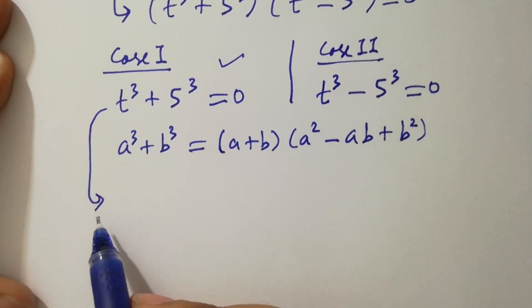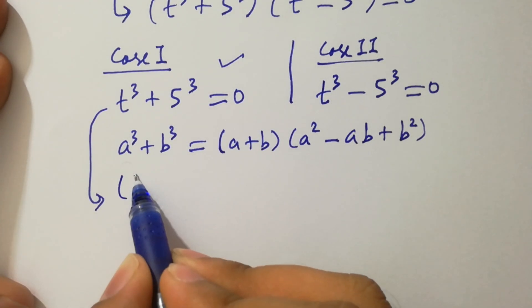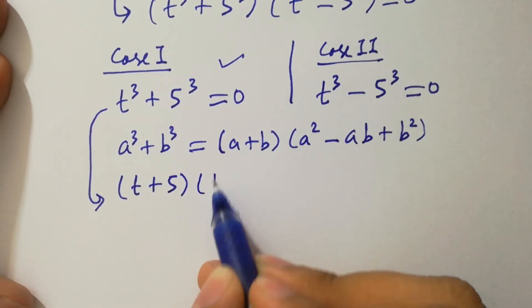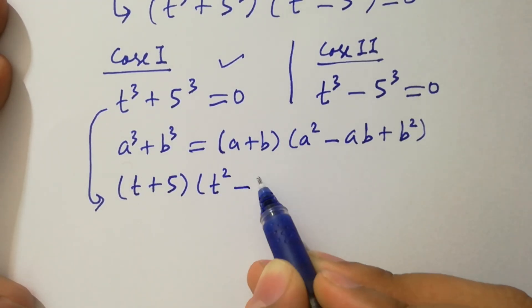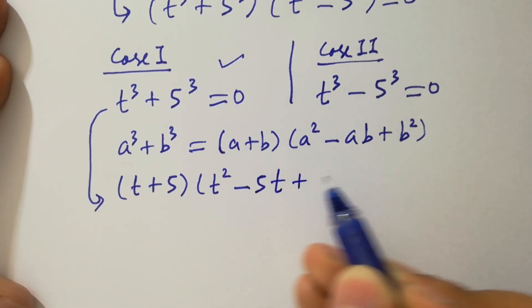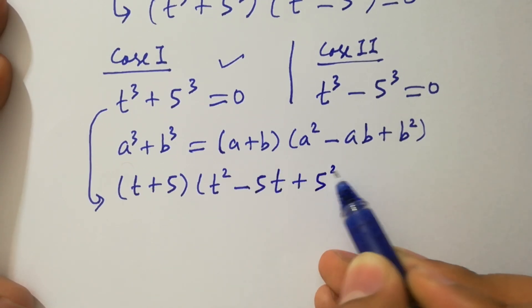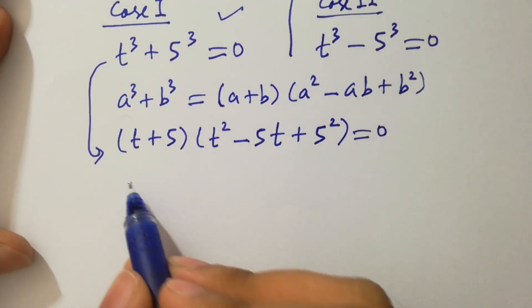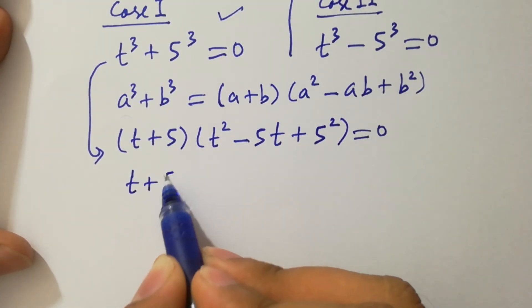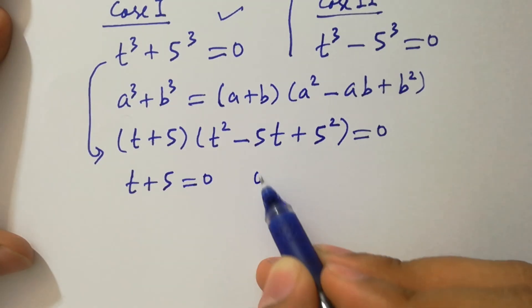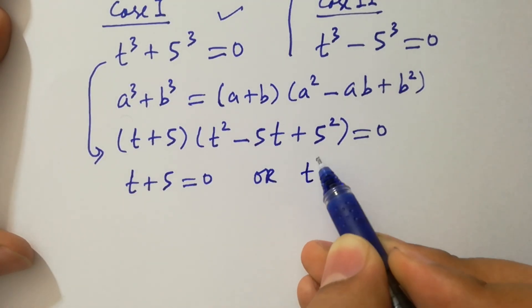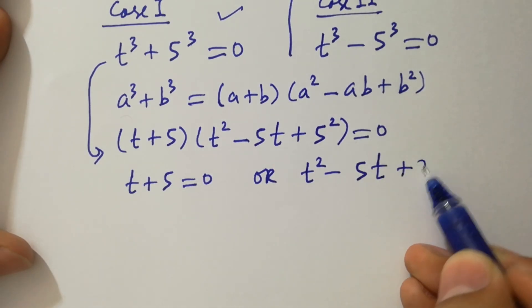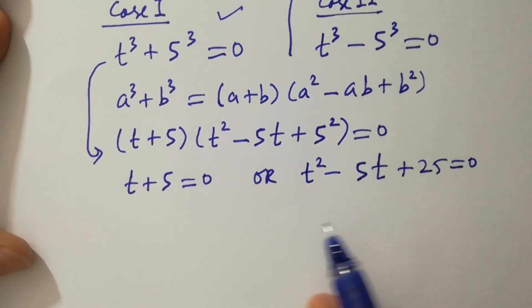Applying the formula, it becomes (t + 5)(t² − 5t + 25) = 0. So either t + 5 = 0, or t² − 5t + 25 = 0.